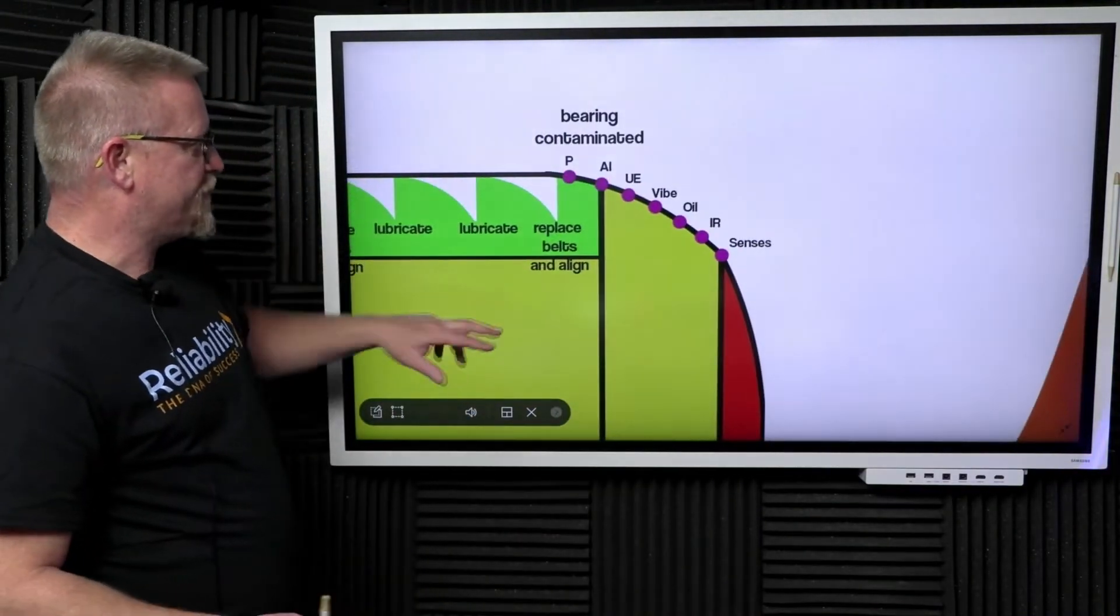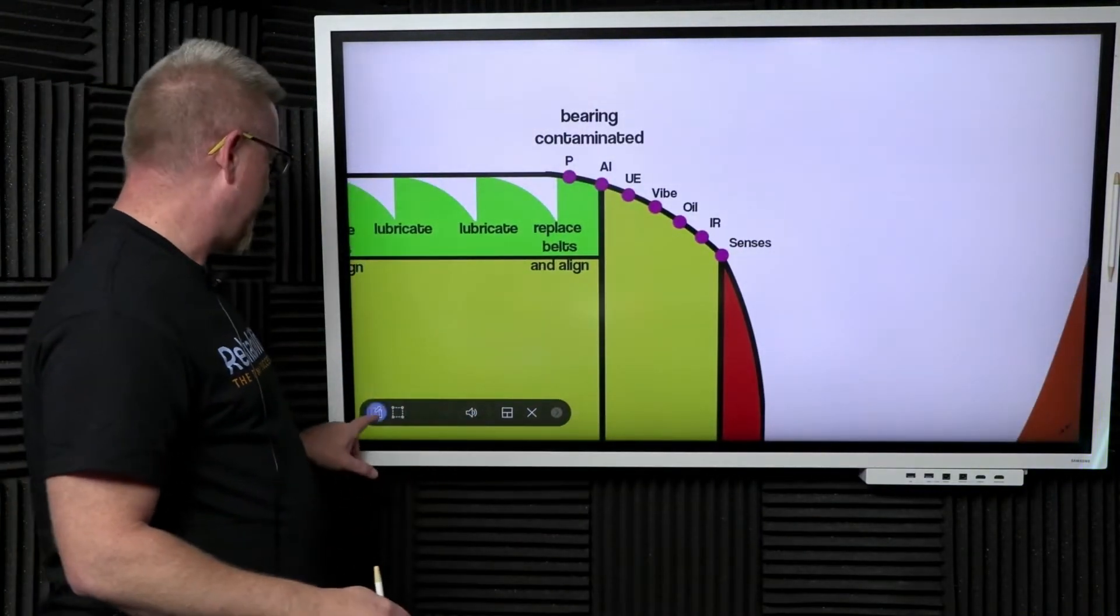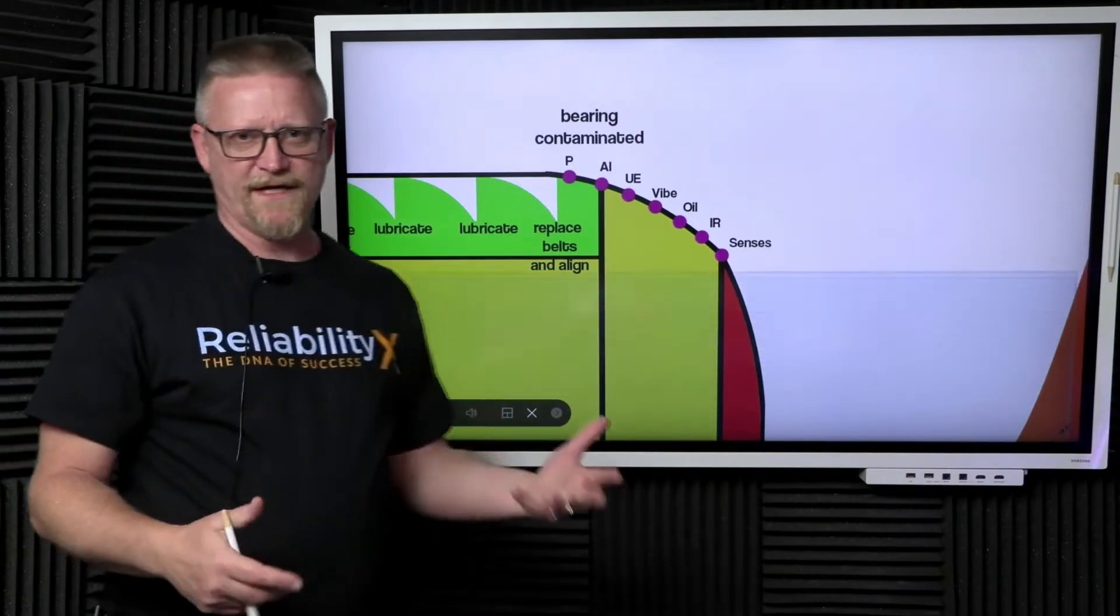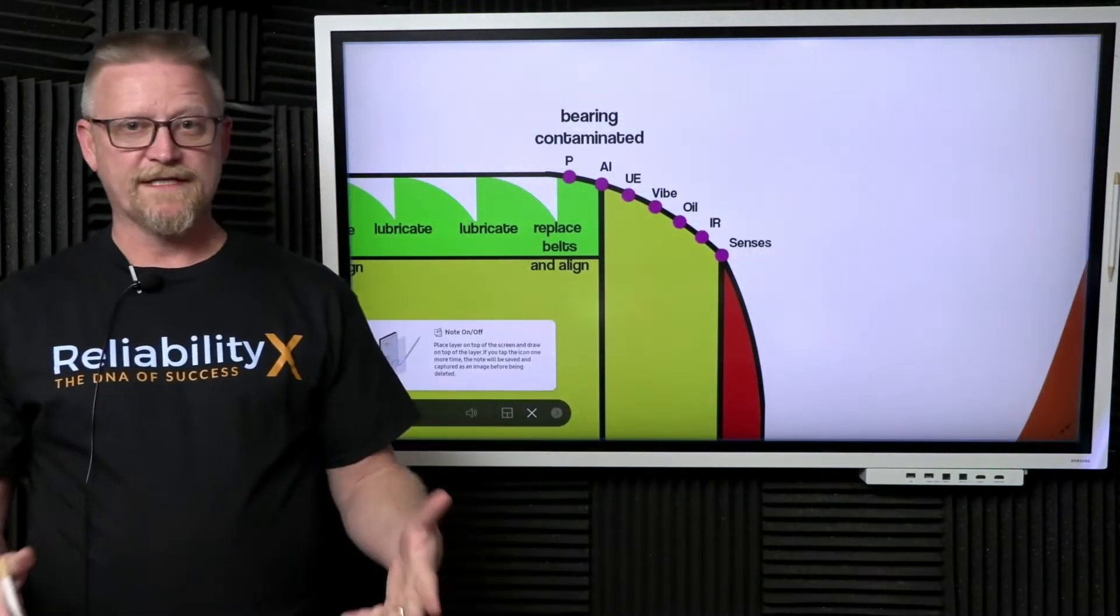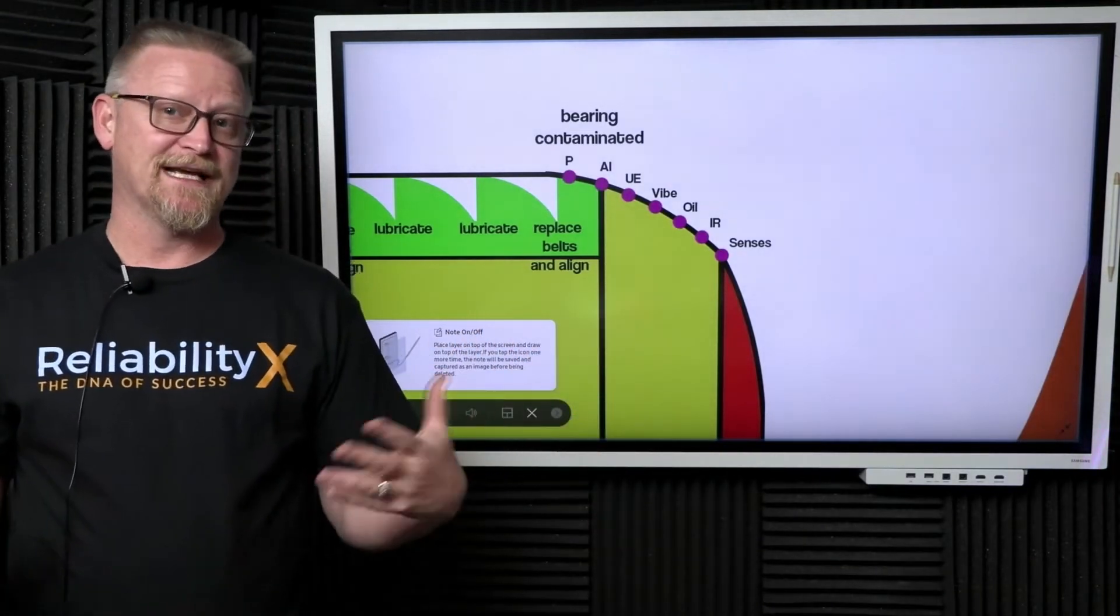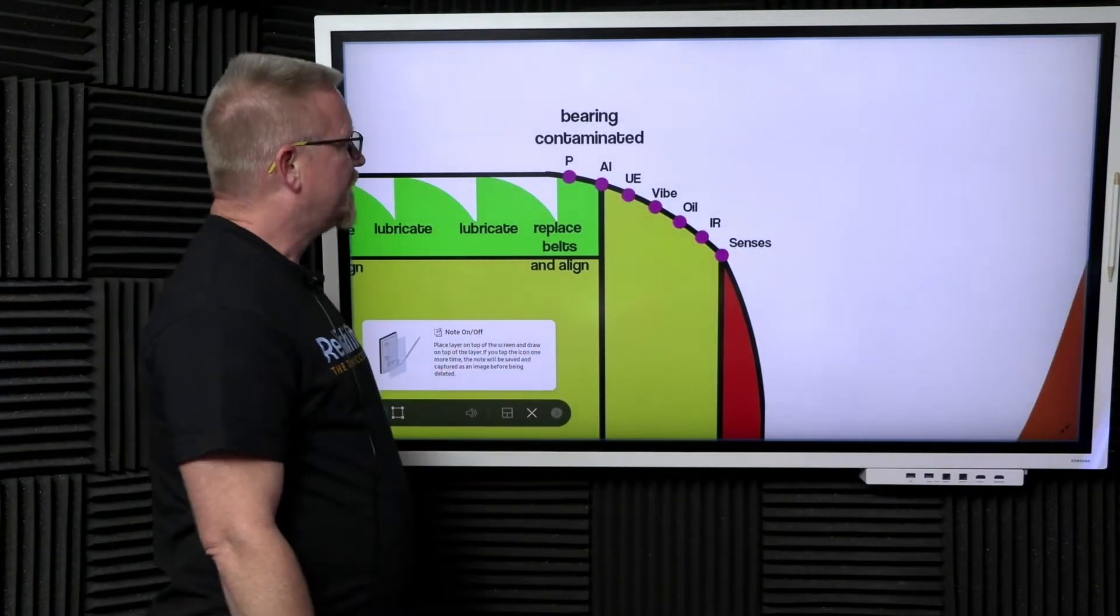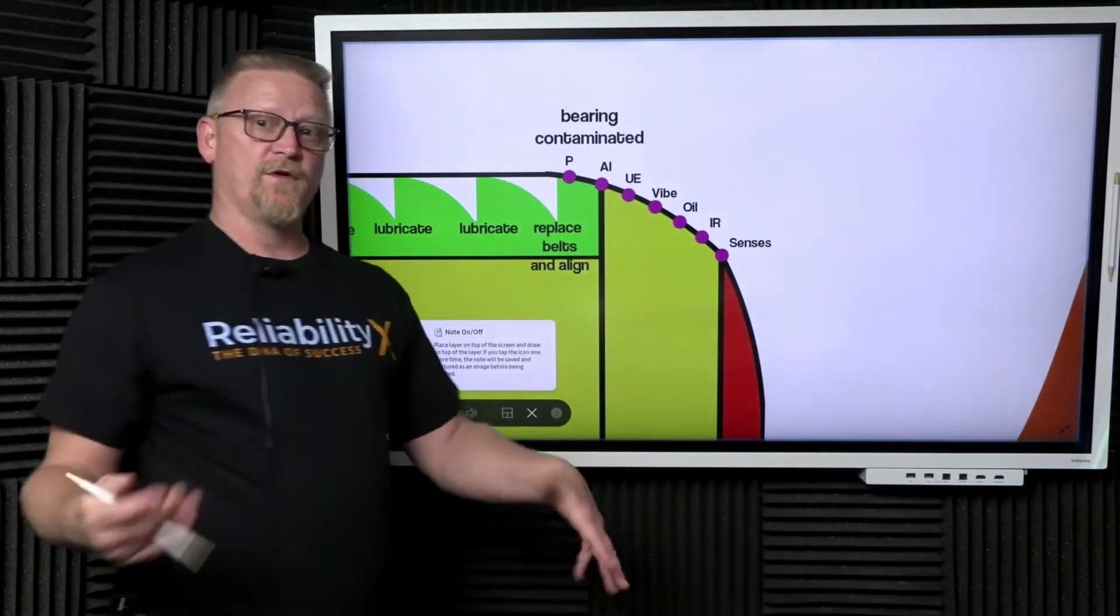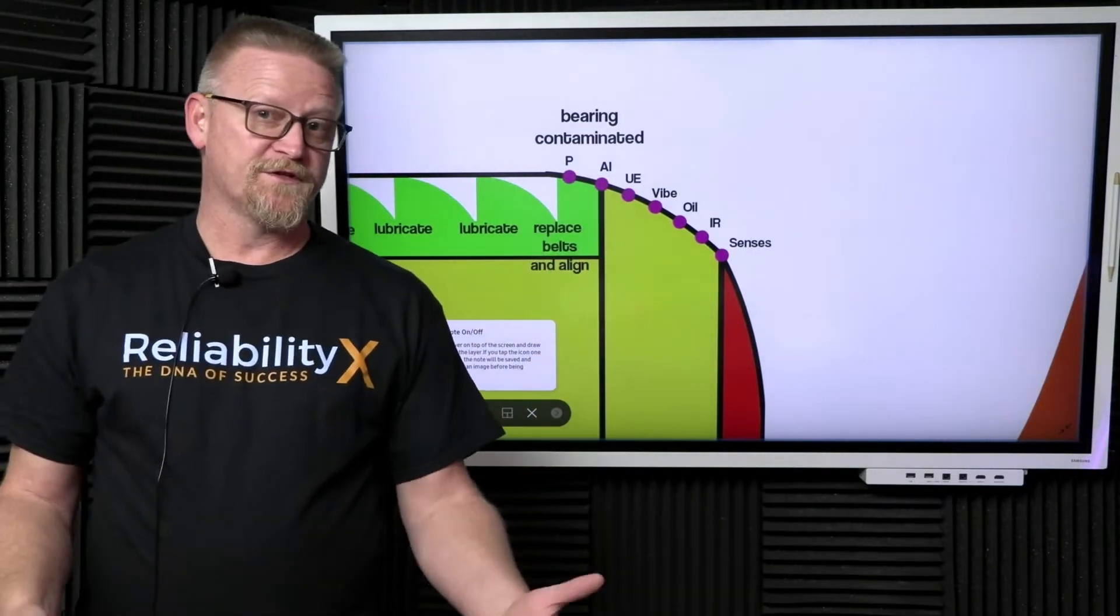Eventually some event occurs—somebody doesn't clean off the tip of their grease gun, some event occurs and a speck of contamination gets inside our bearing. We've done all the right things from a preventive maintenance strategy perspective.